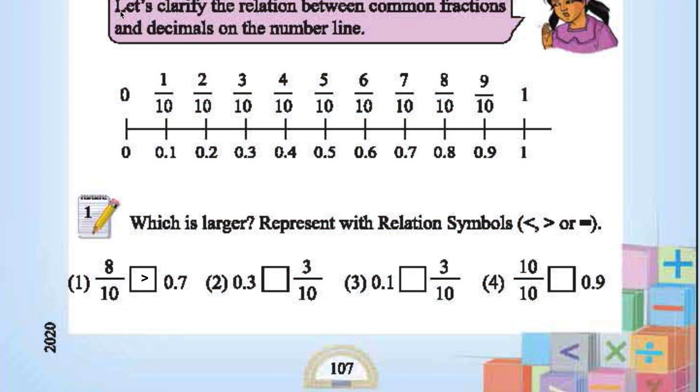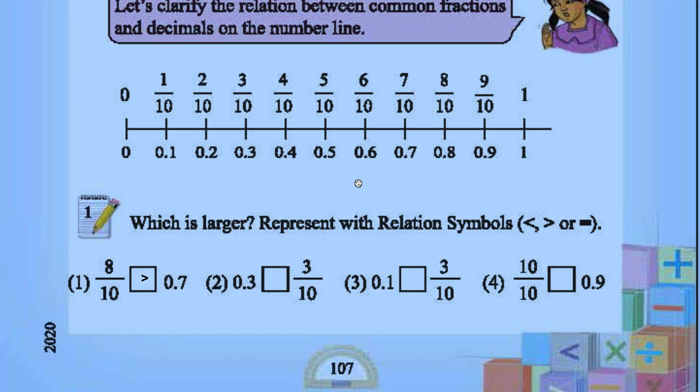0.3. 3 by 10 equal. Right. 3 by 10 is nothing but 0.3. Therefore, both are equal.